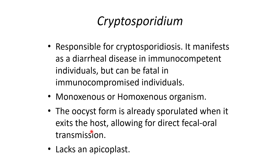Moving on to the next parasite: Cryptosporidium, responsible for cryptosporidiosis. It manifests as a diarrheal disease in immunocompetent people, but in immunocompromised individuals it can be fatal. It is a monoxenous organism, so it only needs one host to complete its life cycle. Something that sets Cryptosporidium apart from the other organisms discussed today is that the oocyst form is already sporulated when it exits the host, so immediate infection and direct fecal-oral transmission can occur. Cryptosporidium also lacks an apicoplast.